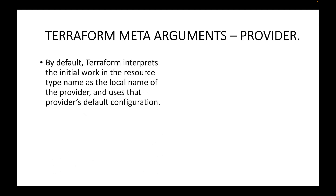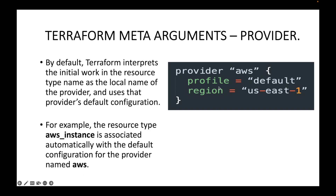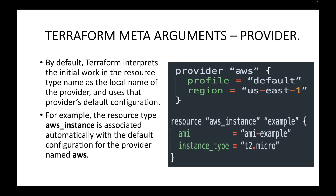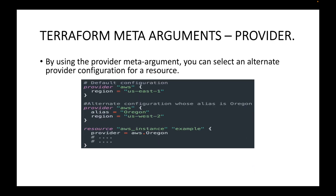By default, Terraform interprets the initial word in the resource type as the local name of the provider and uses that provider's Terraform configuration. For example, the resource type AWS underscore instance is associated automatically with the default configuration for the provider named AWS. So for a given resource block, that default provider block will be considered. By using the provider meta argument, you can select an alternate provider configuration for a resource.